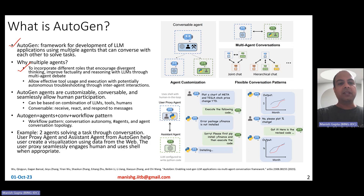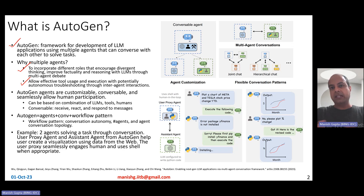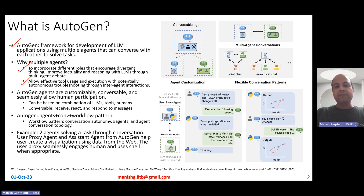Autogen also allows effective tool usage and execution with potentially autonomous troubleshooting through inter-agent interaction. So one agent can say, hey, let me verify your output, and the other agent can actually verify that.